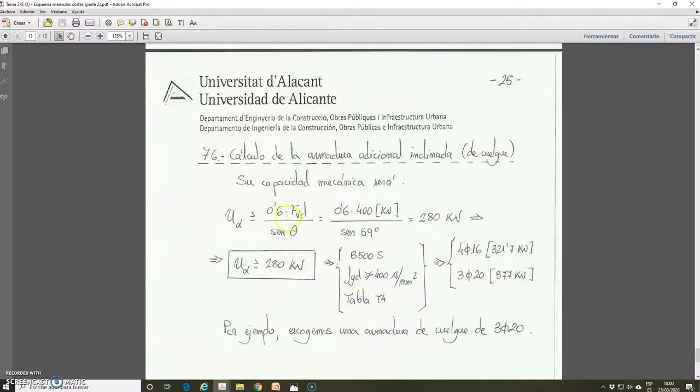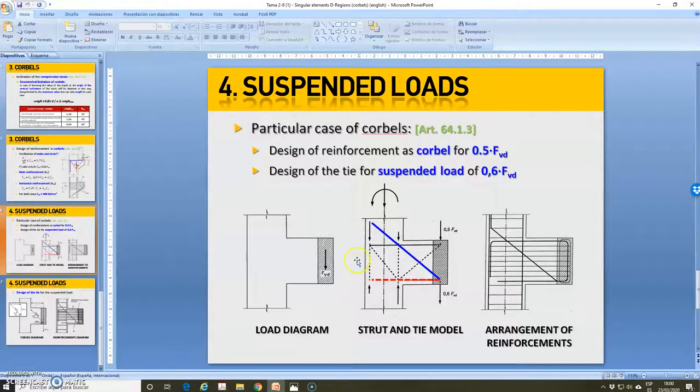And then, we are going to calculate the new thing here. The new thing is the additional inclined reinforcement, which we need to add in this case of corbels with suspended load. I told you that in the corbels with suspended load, here, in the strut and tie model, we have a tie. And in this tie, we must arrange a new additional reinforcement. And this additional reinforcement is designed considering here a suspended load equal to 0.6 FBD, the total FBD, which is transmitted by the beam to the corbel.